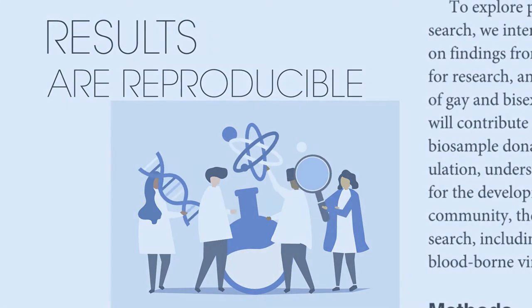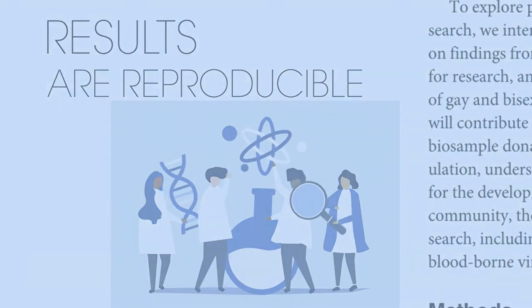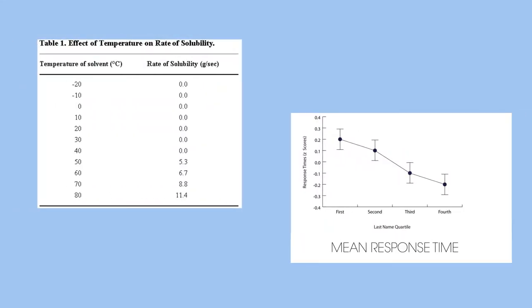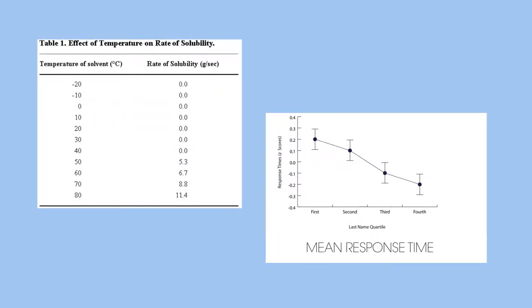The results are stated simply in tables or graphs. There is no explanation of the results in this section. Tables must have the units at the top of the columns and may include averages. Graphs must have the axes labelled and include a title, usually underneath.